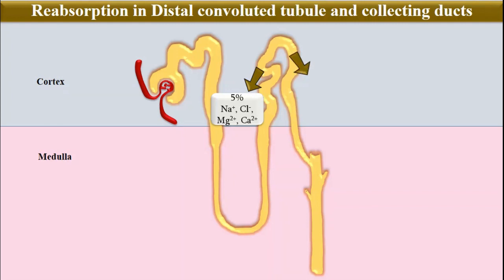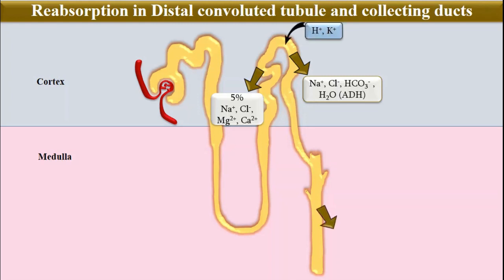The later parts of the distal convoluted tubule and the cortical collecting tubules reabsorb sodium chloride, bicarbonate, and water in the presence of antidiuretic hormone, while hydrogen and potassium are secreted into these segments. The medullary collecting ducts reabsorb urea and water, again in the presence of antidiuretic hormone, while hydrogen is secreted into the medullary collecting ducts.